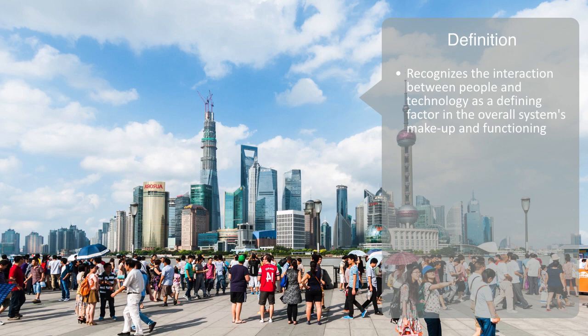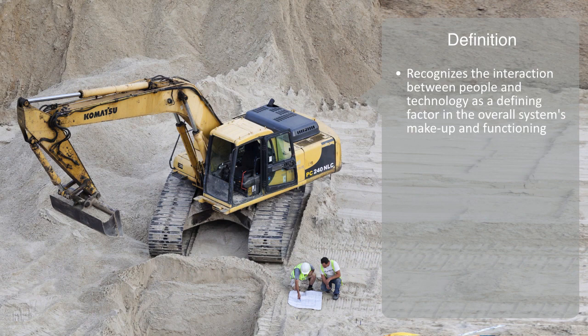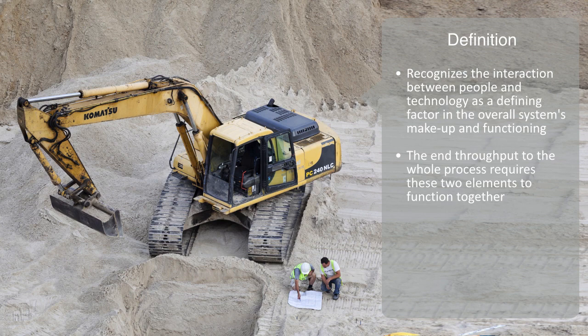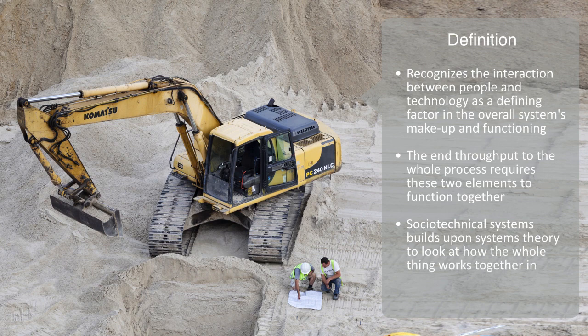The ultimate functioning of almost all technologies will involve the interaction between people and technology. Whether we're talking about a wheelbarrow, a car, or a subway station, the end throughput to the whole process requires these two elements to function together. And socio-technical systems builds upon systems theory to look at how the whole thing works together in effecting a joint outcome.